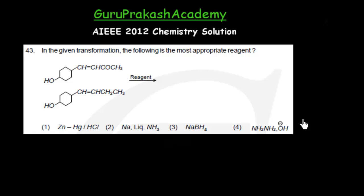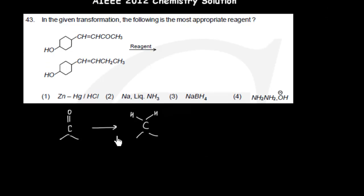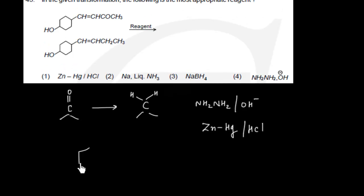This problem is about the reduction of C=O to CH₂. This transformation can be done by two methods: N₂H₄ and KOH (Wolff-Kishner reduction), or Zn(Hg) with HCl (Clemmensen reduction). The question asks which is the most appropriate reagent for the given transformation.